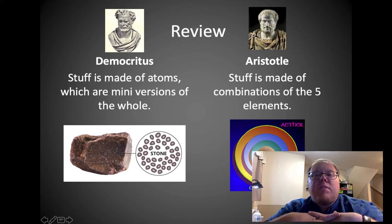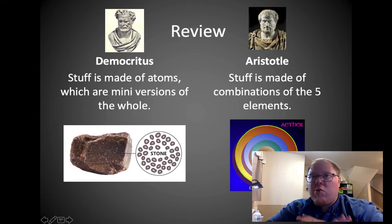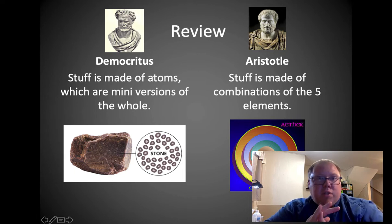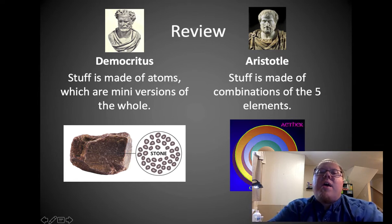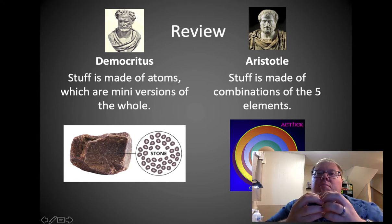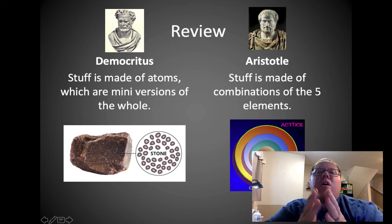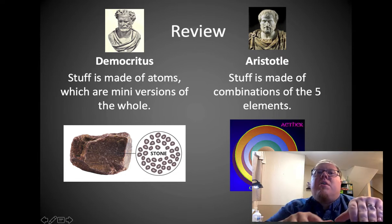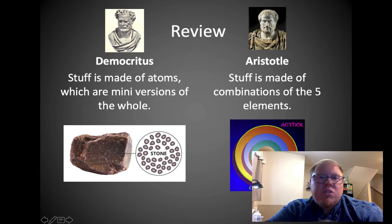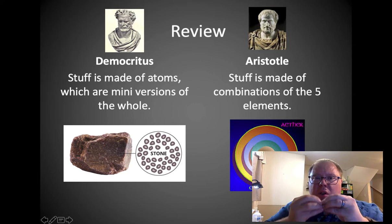Today's modern understanding has pieces of both. We do believe things are made of elements like Aristotle did, combinations of these elements. But it's not those five elements. Earth, water, air, fire, and ether are no longer considered elements. Democritus thought stuff was made out of atoms, but he thought there were an infinite number and every material was made of its own version. That's not entirely wrong, but atoms can combine together. When you get down to the smallest atoms that can be broken apart, that's what we call an element.